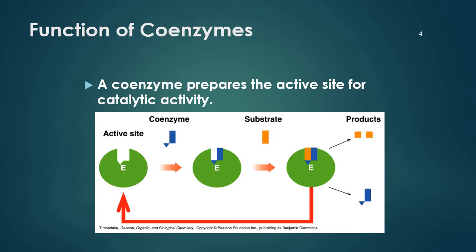Vitamins function as co-enzymes. A co-enzyme prepares the active site for catalytic activity. This co-enzyme is actually the vitamin, and it prepares the active site for catalytic activity. Whenever the substrate comes, it will bind with the active site and will result in products and also side products.